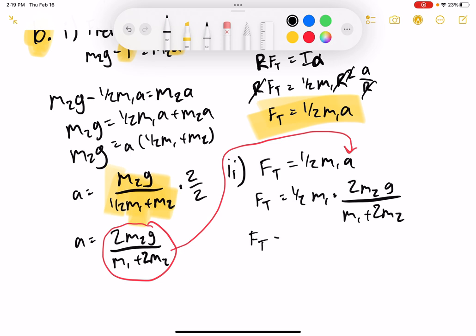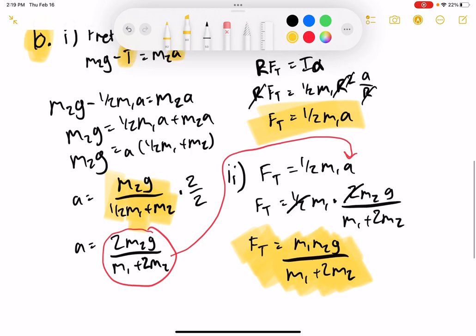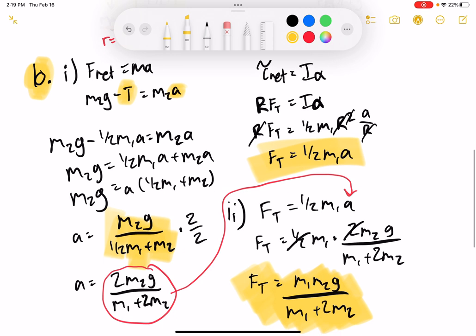And so, this Ft, this half cancels with this two here, and so I'll have M1 M2 G over M1 plus 2M2. And so, that would be my final answer. This one, hopefully, wasn't too bad. It's a little bit shorter than some of the other questions, but it's a great review of how to use both torque and forces. Thanks so much for watching.